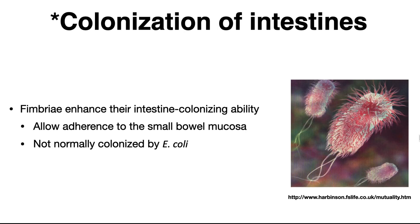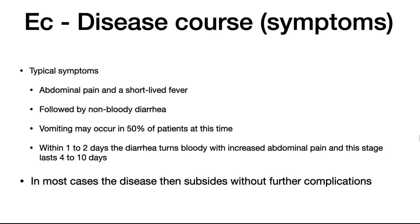The first virulence factor of E. coli is that it has fimbriae that enhance its intestine-colonizing ability. It allows adherence to the small bowel mucosa — normally, commensal E. coli bind to the large intestines, and the small intestines are not normally colonized by E. coli. The typical symptoms after ingesting this organism are abdominal pain, a short fever, and the abdominal pain can be intense. This initially begins with non-bloody diarrhea, and there is vomiting in about 50% of patients.